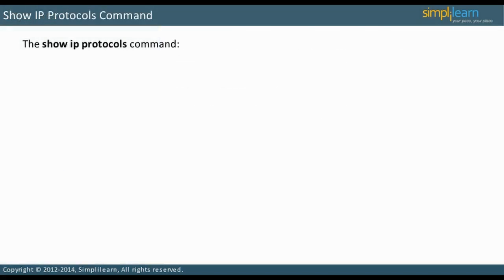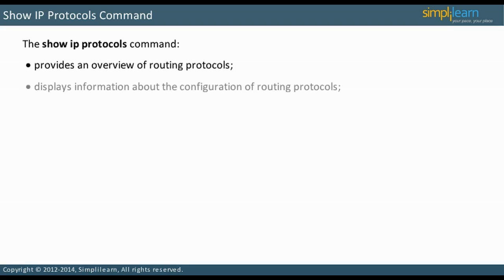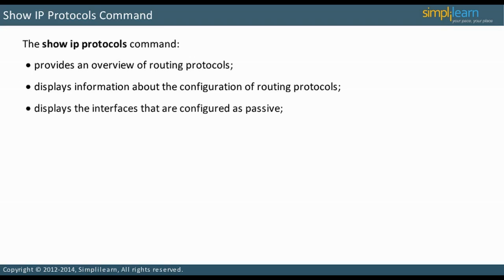The command Show IP Protocols provides an overview of routing protocols. It displays how routing protocols are configured. For example, it indicates if Auto Summary is enabled. This is one of the few commands that displays which interfaces are configured as passive. In addition, the command shows which networks are being advertised.